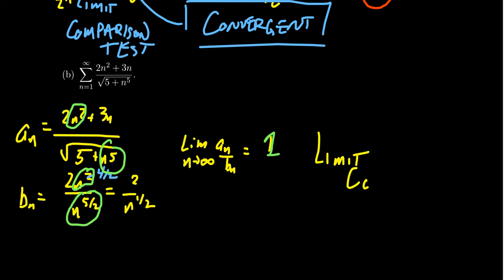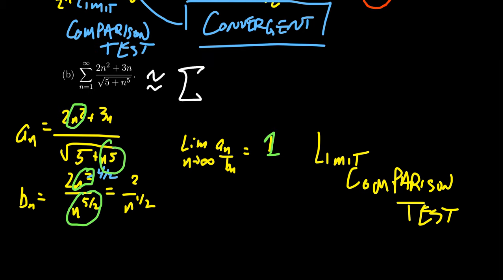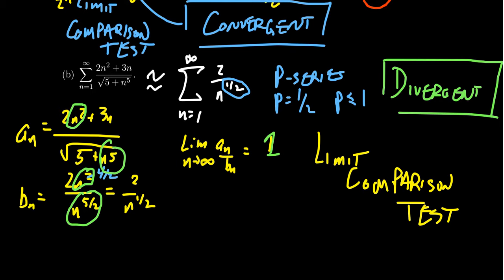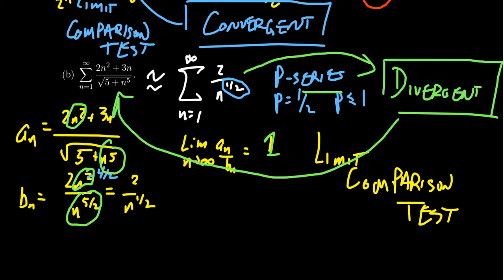The limit comparison test applies. We're comparing to the series involving b_n, so our series has the same asymptotic behavior as the sum from n equals 1 to infinity of 2 over n to the one-half. This new series is a p-series with p equal to one-half. For a p-series to be convergent, p must be greater than 1. Since our p is one-half, which is less than or equal to 1, the p-series is divergent. Therefore, the limit comparison test shows that the original series is likewise divergent.